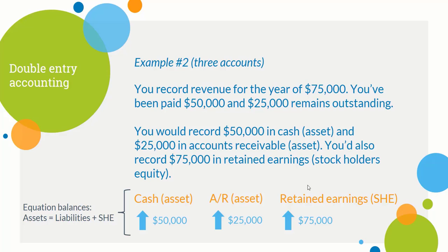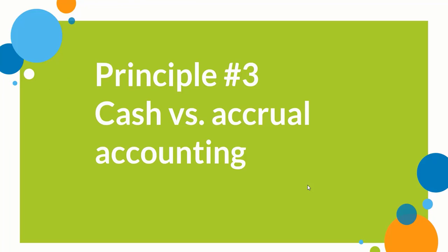That's the second principle: every single transaction affects at least two accounts. This is extremely useful when modeling financial statements, because if you show an increase in revenue, you also need to show how retained earnings increase, how much cash you receive, and what accounts receivable looks like. You can't just show revenue increasing by $75,000 and leave it there — your model needs to be dynamic enough to flow through every piece. That's the core principle of double entry accounting.